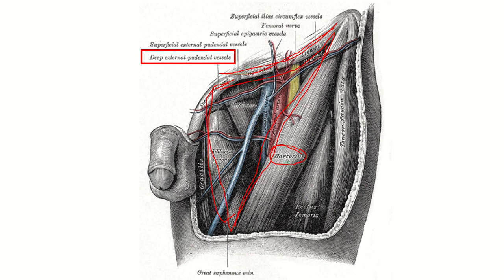The medial border of the adductor longus forms the medial wall or medial boundary of the femoral triangle. The apex is formed by the joining of these two muscles — adductor longus and sartorius. Some muscles are present in the floor and a roof is also present in the femoral triangle. The main structures — femoral vein and great saphenous vein — lie in the femoral triangle. We have to know the name of the artery that is very close to the terminal part of the great saphenous vein.